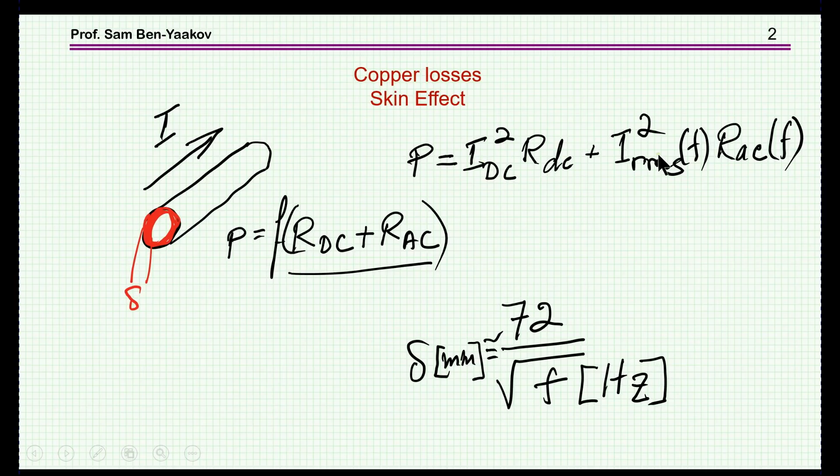If there is a current passing through this wire composed of both DC and AC, then the power dissipated in this section will be dependent on the DC part times RDC and the RMS of the AC component at a given frequency times RAC.